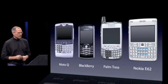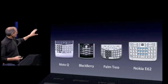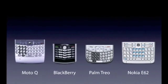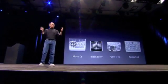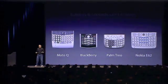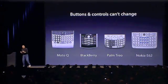The problem is really sort of in the bottom 40 — this stuff right here. They all have these keyboards that are there whether you need them or not. And they all have these control buttons that are fixed in plastic and are the same for every application. Every application wants a slightly different user interface, a slightly optimized set of buttons just for it. What happens if you think of a great idea six months from now? You can't run around and add a button — they're already shipped. The buttons and controls can't change for each application, and they can't change down the road if you think of another great idea.